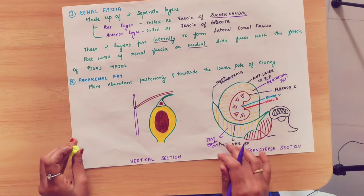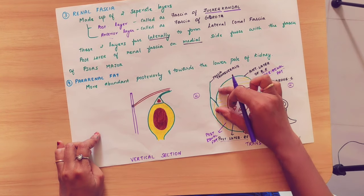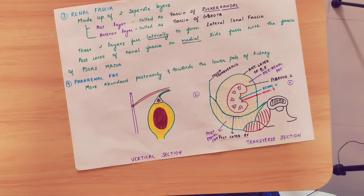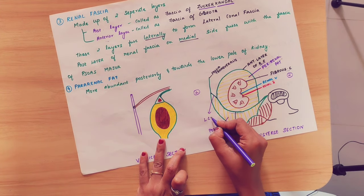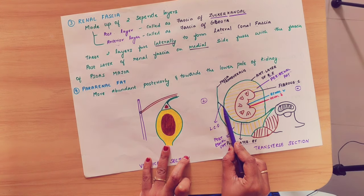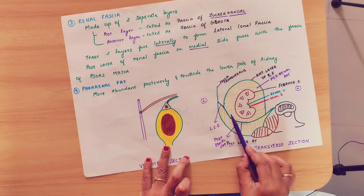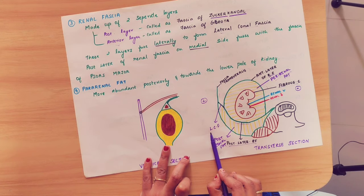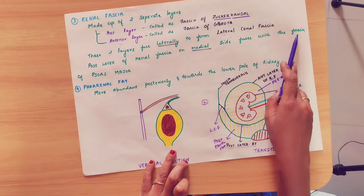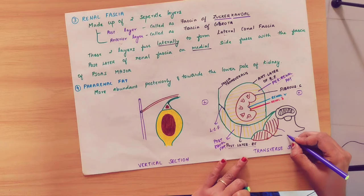On the lateral side, the two layers of renal fascia are fused, forming a structure called the lateral conal fascia. On the medial side, the posterior layer of the renal fascia fuses with the fascia of the psoas major muscle.